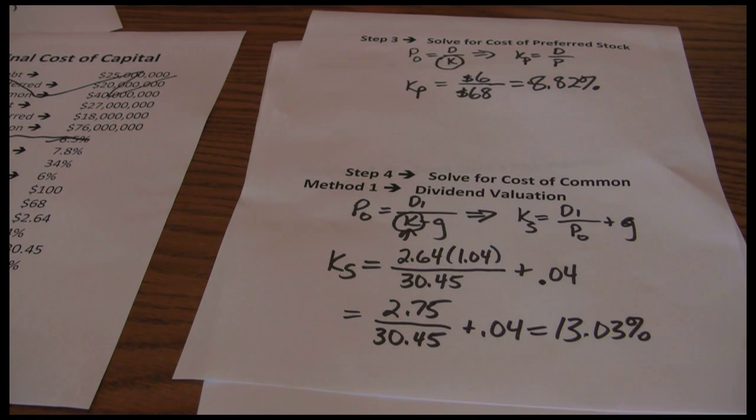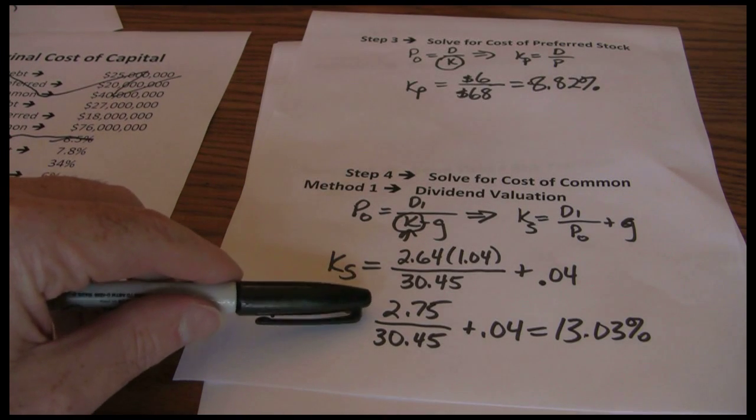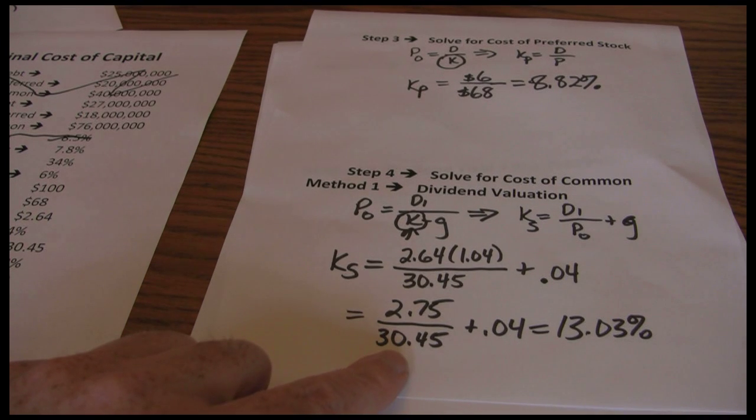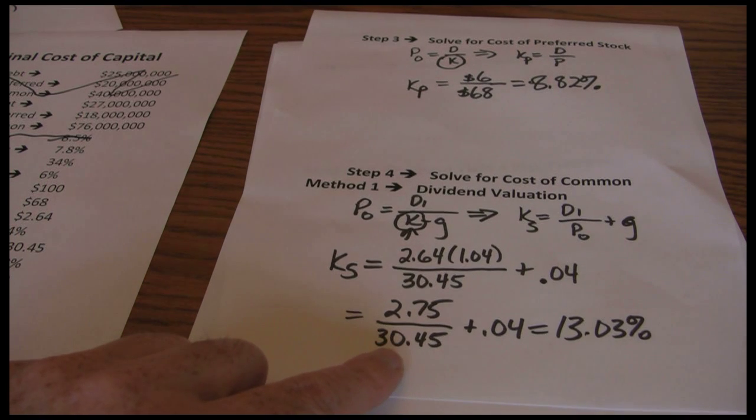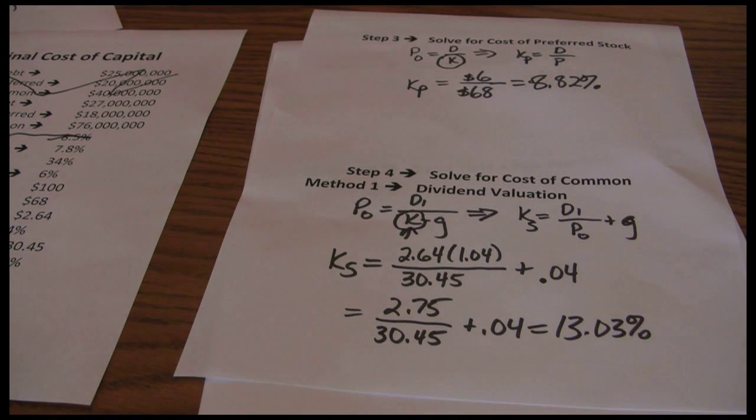It also has a major flaw in that it's based on dividends. So companies that don't pay dividends, it's going to end up giving us an incorrect value. We can't use this reliably for companies that don't pay dividends because this whole first part is going to become zero. And the growth rate in dividends if you're starting from zero is undefined. So it's not going to give us an answer that we can work with.